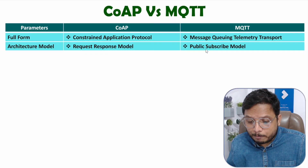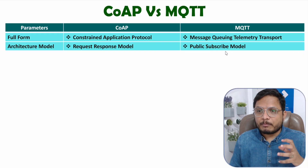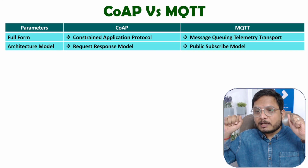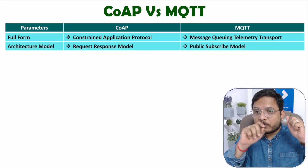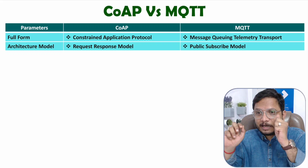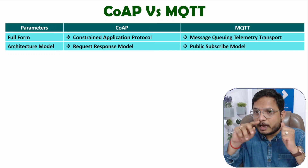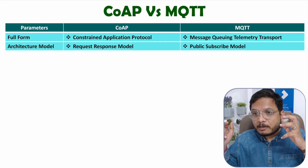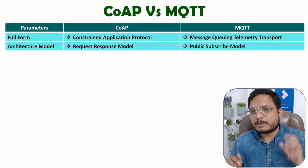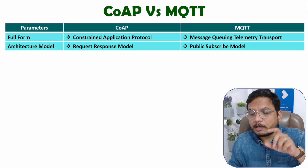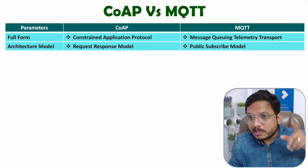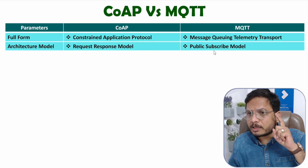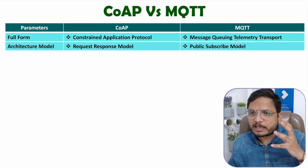In MQTT protocol, we have the Publish-Subscribe Model. Here there will be Publishers and Subscribers. In between Publishers and Subscribers there will be a Broker. The Publisher publishes content to the broker based on topics, and Subscribers subscribe to topics. Based on the topic subscribed, the MQTT broker forwards data from Publisher to Subscriber. If you want to understand this model in detail, please refer to my video on MQTT protocol.